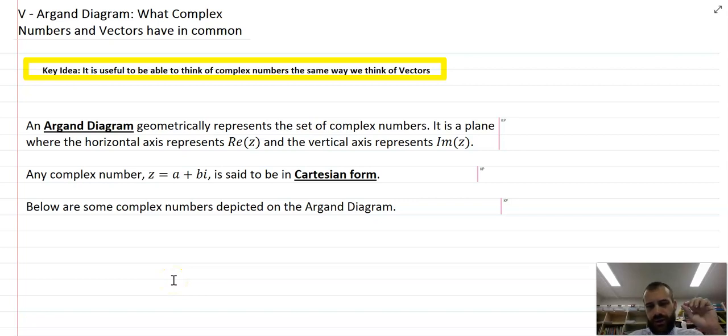This time we're looking at the Argand diagram, specifically what complex numbers and vectors have in common. This is the key idea for the video: it's useful to be able to think of complex numbers the same way we think of vectors. So that's our goal today, to link the two of them to make our life really easy.